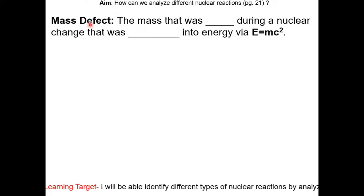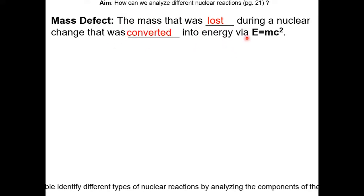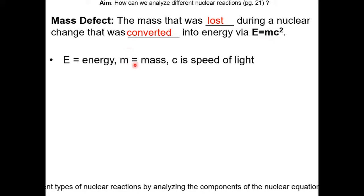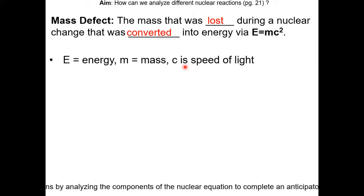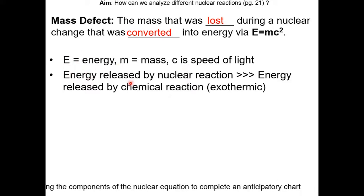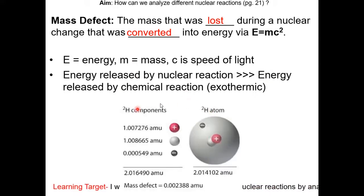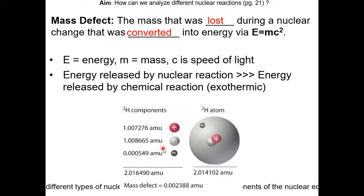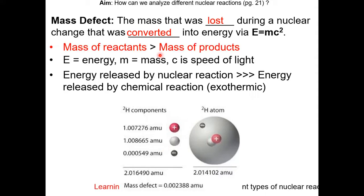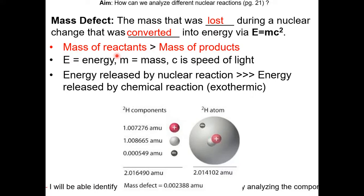Mass defect is the mass that was lost during a nuclear change that was converted into energy by E equals mc squared. E is energy, m is mass, and c is the speed of light. During a nuclear reaction, mass is converted to energy. That is why the energy released by a nuclear reaction is much greater than the energy released by a chemical reaction. In a nuclear reaction, the mass of the reactants is greater than the mass of the products, because some of the mass is converted to energy.